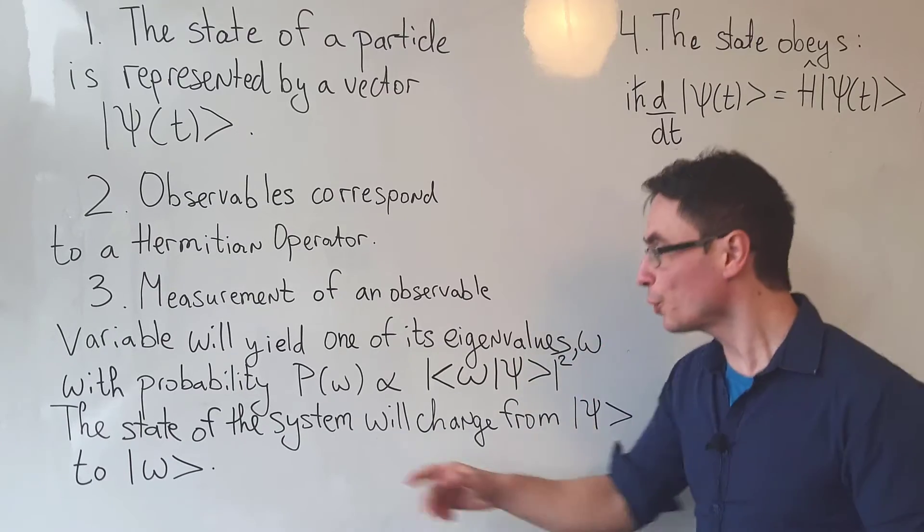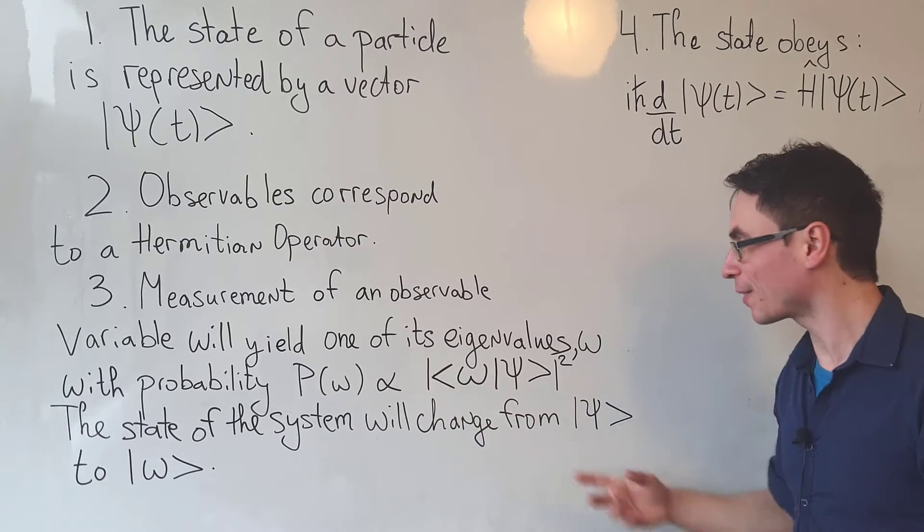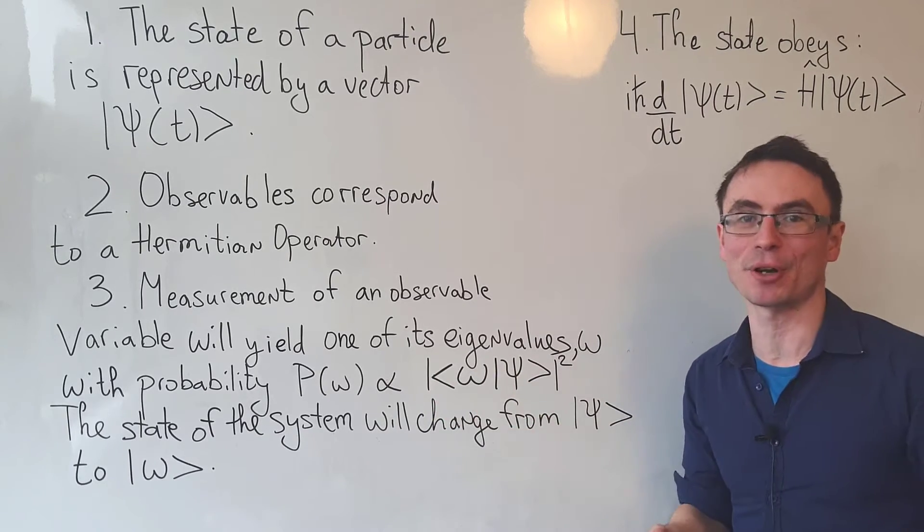For instance, omega. It will do so with a probability which is proportional to the square of the magnitude of this inner product.